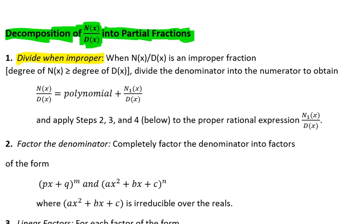And we divide the denominator into the numerator to obtain our n of x divided by our d of x equals our polynomial plus n sub 1 of x divided by d of x. So there's some other steps there as well.